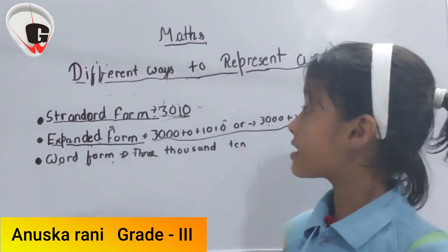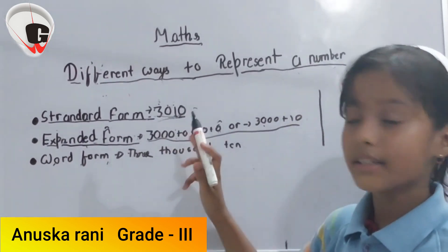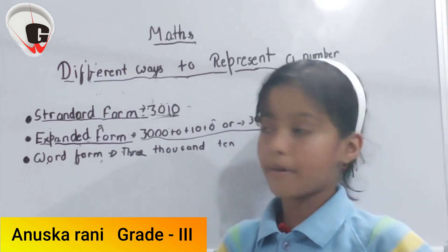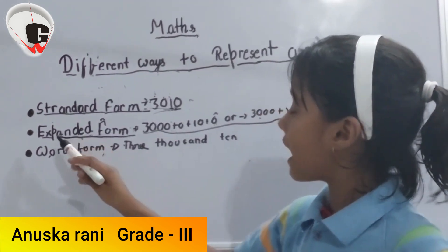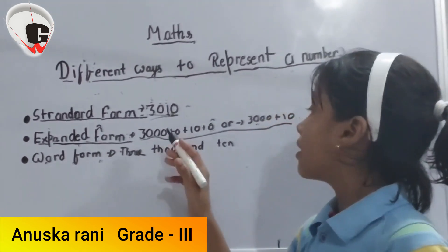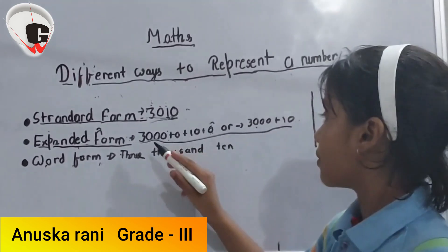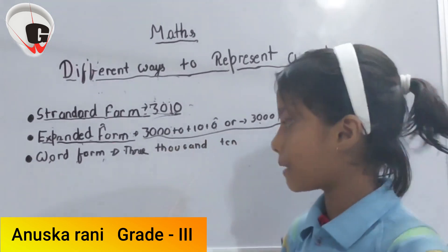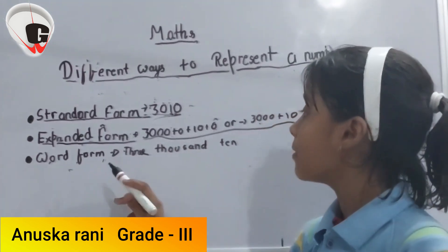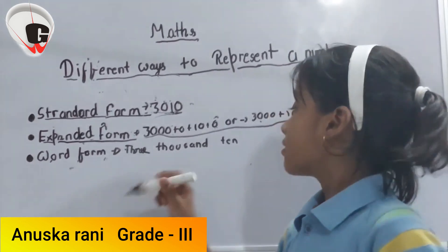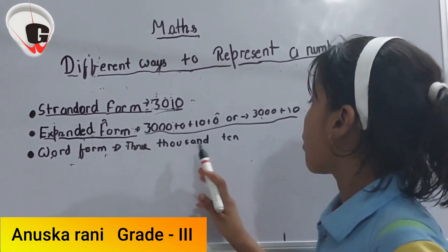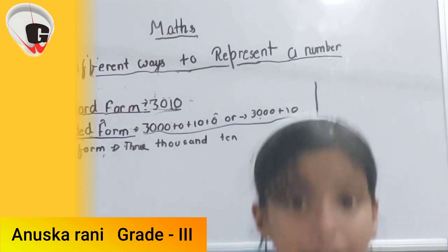Expanded form is like this: 3,000, and it is written by place value — so expanded form uses place value. We add the numbers by place value. In word form, we write using the number in words — 3,000 is written as three thousand.